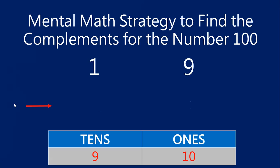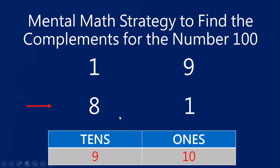Let's try the number 19. Move left to right, starting with the one. What do I add to one to total nine? One plus eight equals nine. Then move to the ones place — there's a nine. What do I add to nine to total 10? Nine and one equals 10. The complement of 19 is 81. So if I'm at 19 and want to quickly get to 100, I can then easily skip count — 100, 200, 300 — or find the amount of change if I'm working with money.